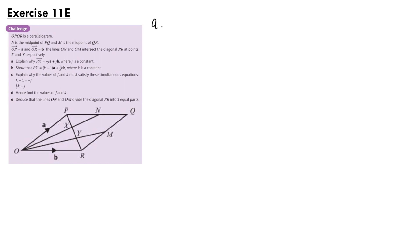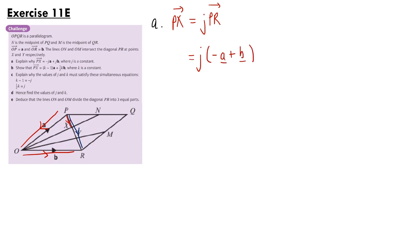Looking at vector px, it lies on the line pr, so we can say px equals a multiple of pr. Going from p to r is the same as going from p to o and then o to r, so pr equals minus a plus b. Therefore, the vector px equals minus j lots of a plus j lots of b, as required.